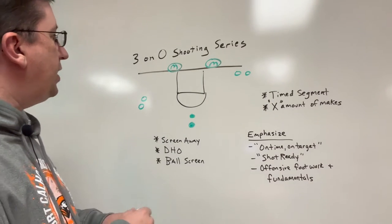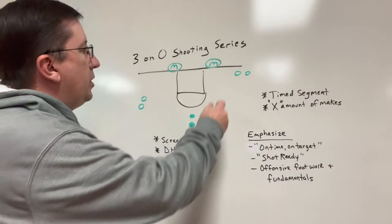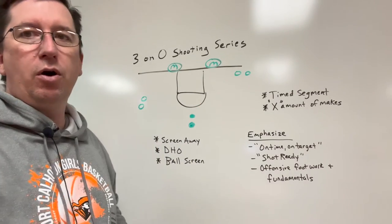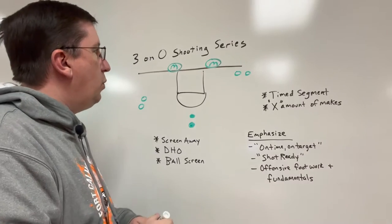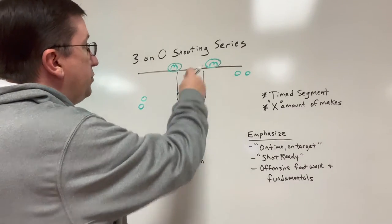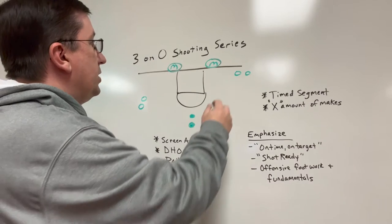So we have three lines here. We have the ball here at the top, we've got a group here in the corner, and we've got a group here on the wing. What we want to do here, and we've got two managers down here on the baseline ready to pass for us.